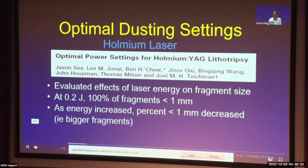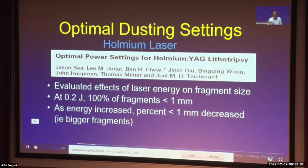For the holmium laser, a lot of our dusting settings are based off a foundational paper published in 2012 by Joel Teichman, who did much of the foundational research on holmium laser lithotripsy mechanics. This study looked at the effects of laser energy on fragment size using the holmium laser. At 0.2 joules — the lowest energy setting available — 100% of fragments created were less than 1 mm. As energy increased, the percentage of small fragments decreased, meaning bigger fragments were created. This formed the basis of how we set our dusting settings.